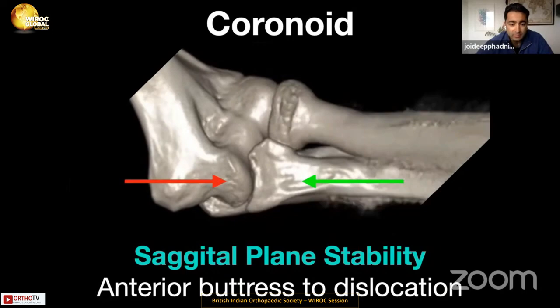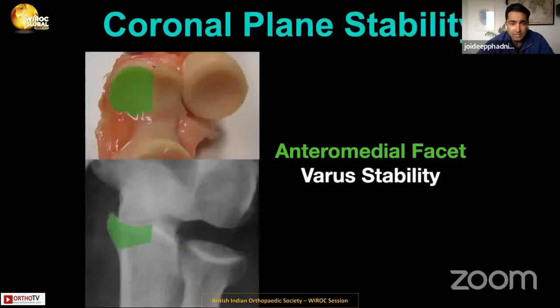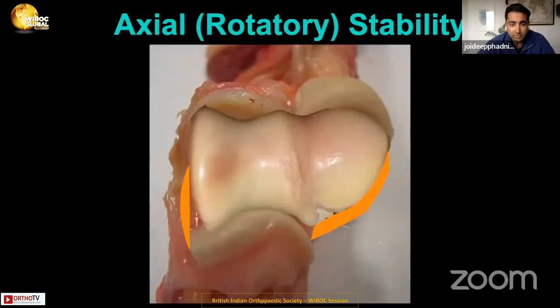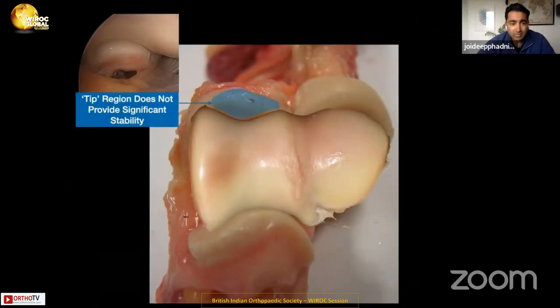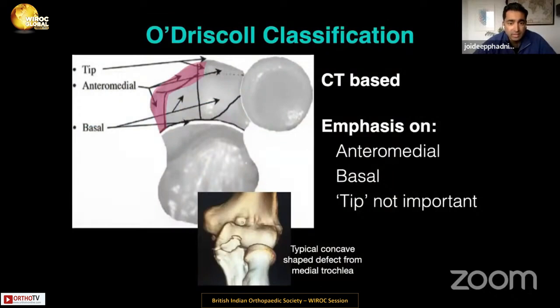What's the role of the coronoid? It has a role in sagittal plane stability, providing an anterior buttress to subluxation, and is also important for coronal plane stability. The key part is the anterior medial facet, which resists varus forces and rotational forces, resisting internal rotation. Importantly, the tip region of the coronoid doesn't actually provide significant stability. Coronoid fractures are classified by the O'Driscoll classification — a CT-based classification that emphasizes the role of anterior medial coronoid fractures and basal fractures, noting that tip fractures are less important.